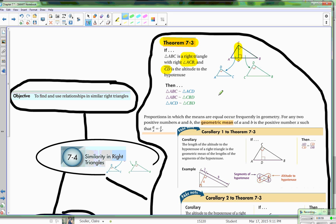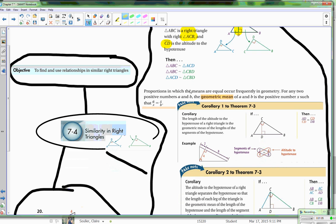A geometric mean is a proportion of any two positive numbers A and B and a positive number X, such that A over X is equal to X over B. It's called a geometric mean.